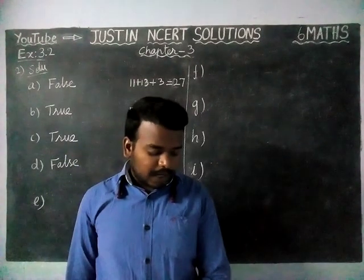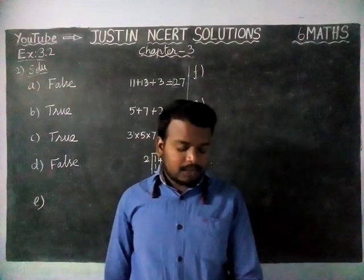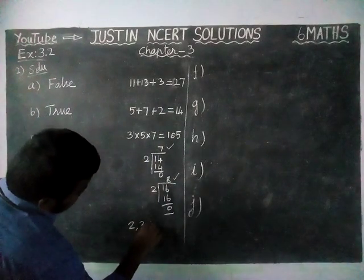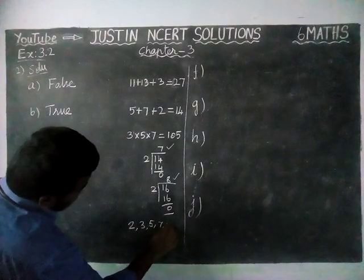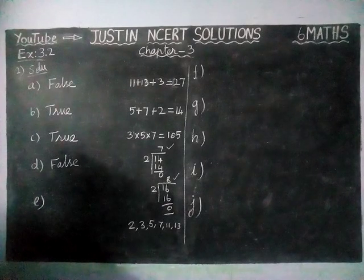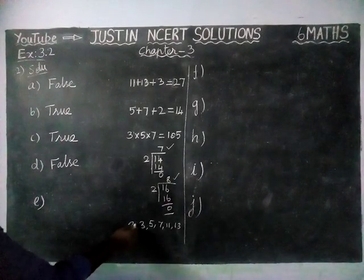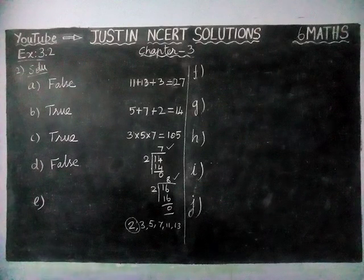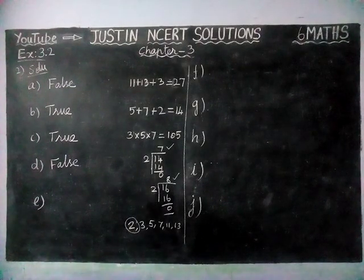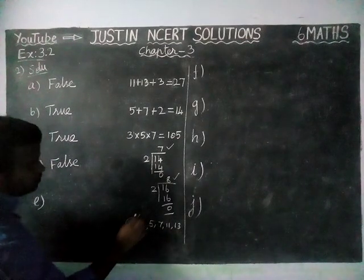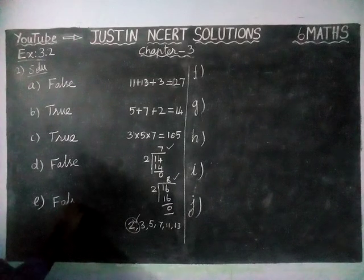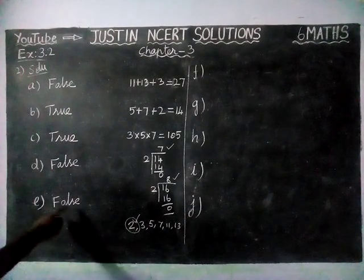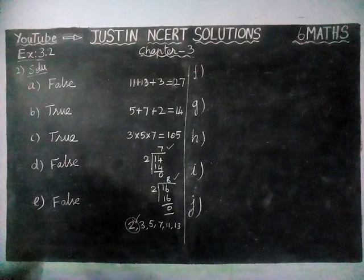Option E: all prime numbers are odd numbers. The prime numbers starting from the beginning are 2, 3, 5, 7, 11, 13, and so on. Notice that except for 2, all prime numbers are odd. But 2 is an even number, so the statement that all prime numbers are odd is false. All prime numbers are not odd numbers, because 2 is an even prime number.